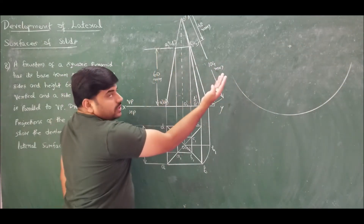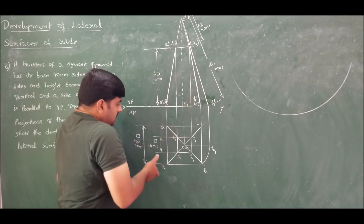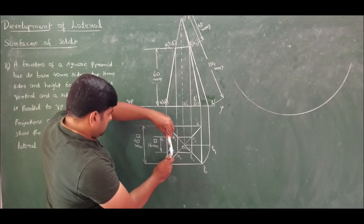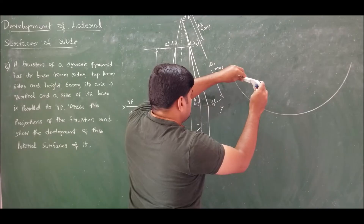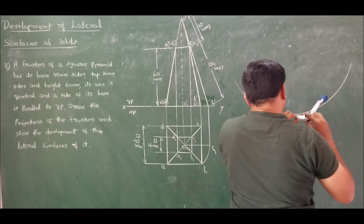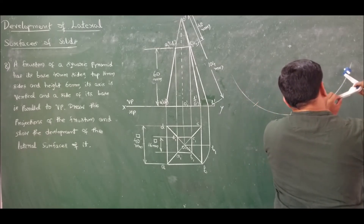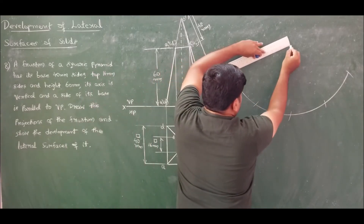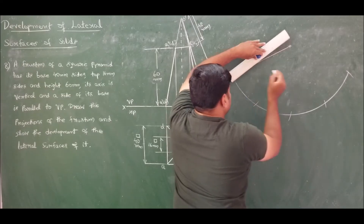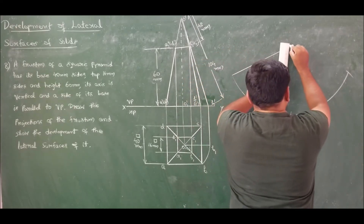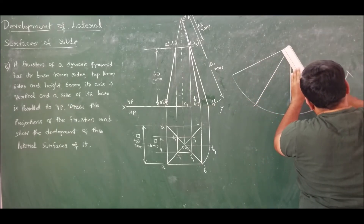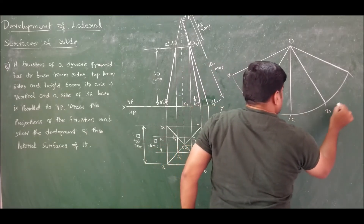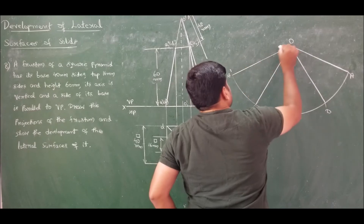Cutting and unfolding gives four triangular faces. The base side of each face is 40 mm for this pyramid. Mark off four base lengths of 40 mm along the arc, giving points A, B, C, D, and back to A. Connect from center O to A, B, C, D, and finally back to A. Each of these slant lines is 104 mm, which is the true slant edge length.